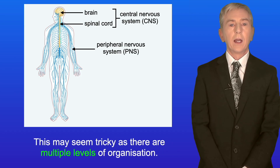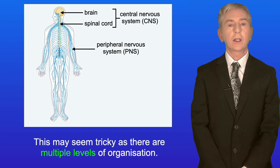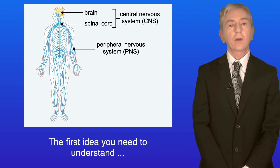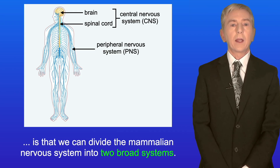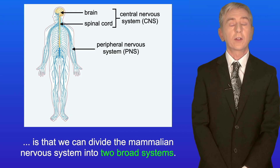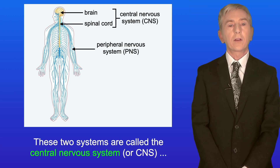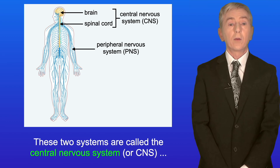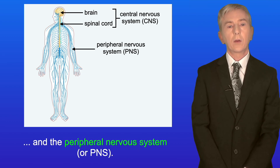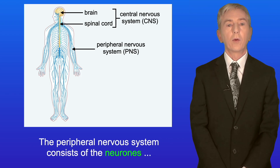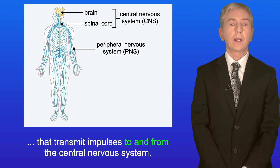This may seem tricky as there are multiple levels of organization, but it's not as tricky as it looks. The first idea you need to understand is that we can divide the mammalian nervous system into two broad systems based on structure. These two systems are called the central nervous system or CNS, and the peripheral nervous system or PNS. The central nervous system consists of the brain and the spinal cord.